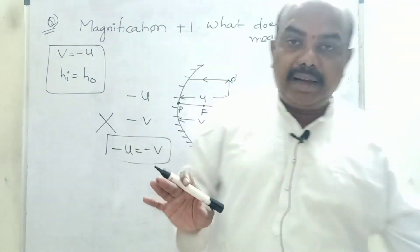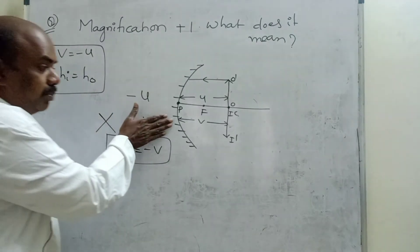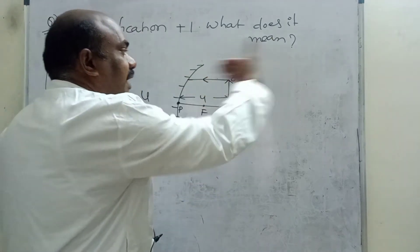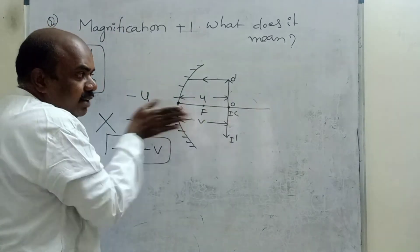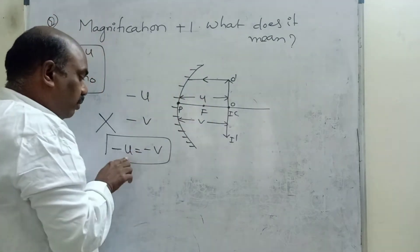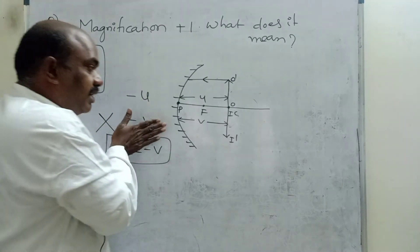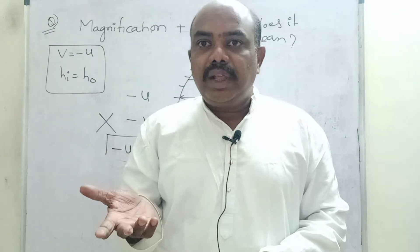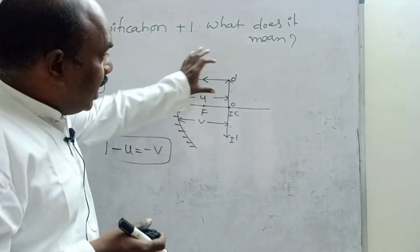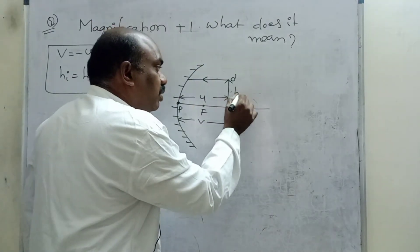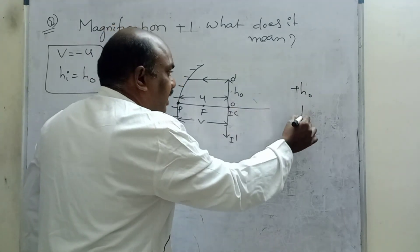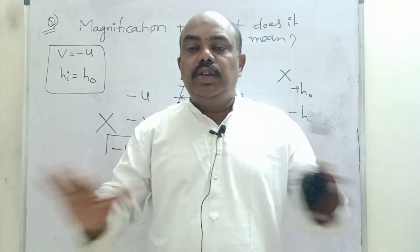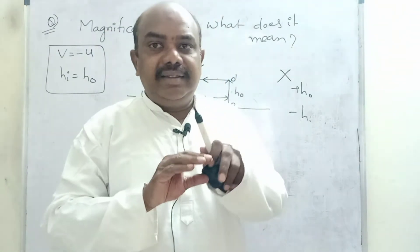First condition fails, so it is not a concave mirror. Checking the second condition: if the object height is above the principal axis it is positive, so H0 is positive. But the image height for concave mirror is negative (inverted image), so one is positive and one is negative. Second condition is also not satisfied. So the given mirror is not a concave mirror — magnification plus 1 does not correspond to a concave mirror.